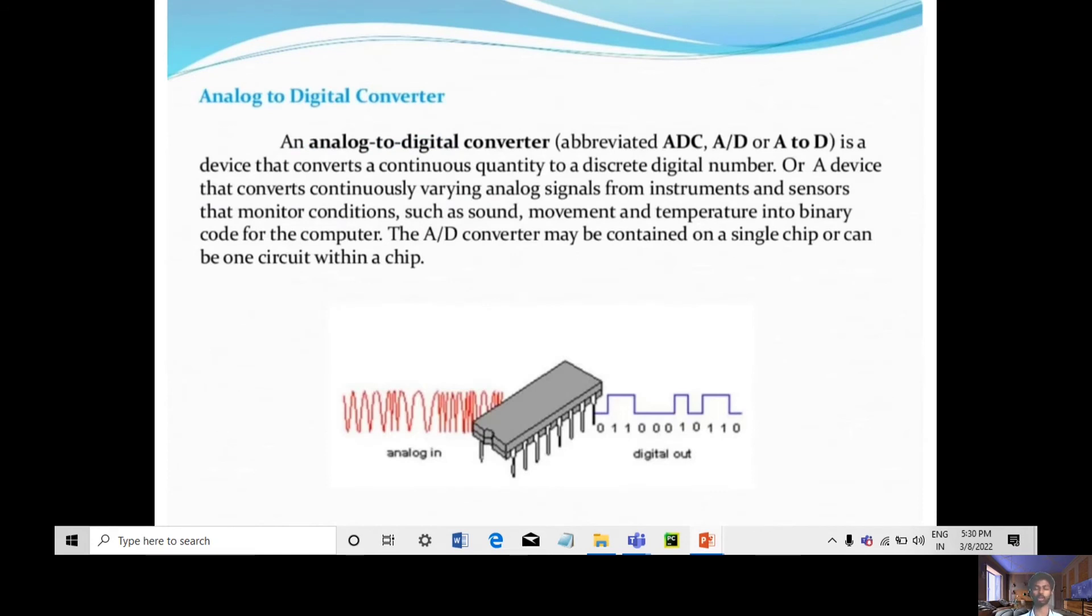Analog to digital converter is a device which converts continuous quantities to a digital number. It converts continuously varying analog signals from instruments, sensors, monitors, and temperature measurements.